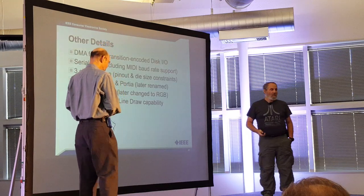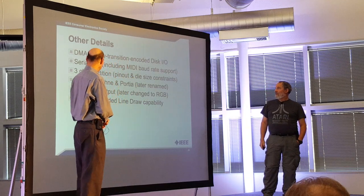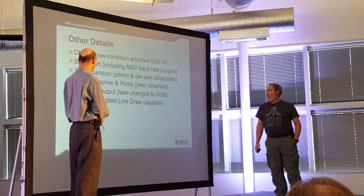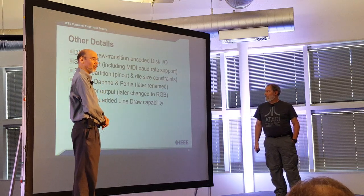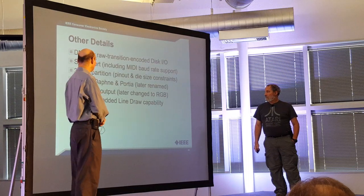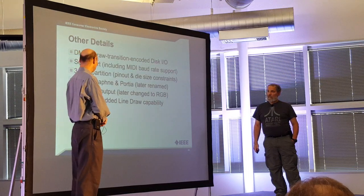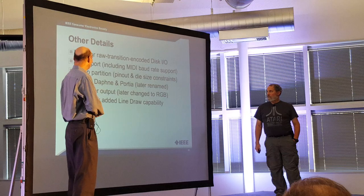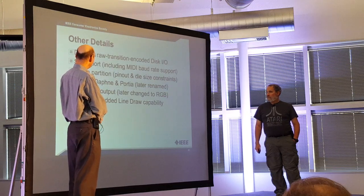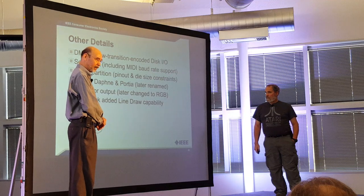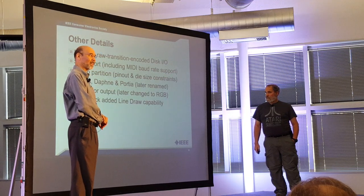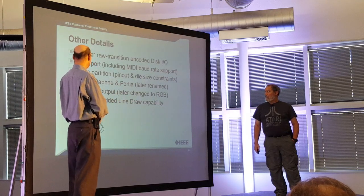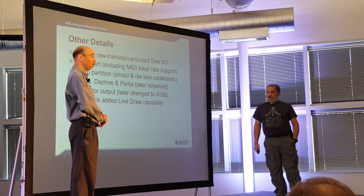We added DMA raw-transition-coded disk I/O. This allowed software to encode multiple formats in the disk drive and — like the Apple II, which also had raw transition coded disk — allowed people to play interesting games with copy protection. We also added a serial port; having designed a super-serial chip for the Apple II where a complaint was the lack of MIDI support, I made sure to include the MIDI baud rate in the Amiga's serial port, and that turned out to be useful.